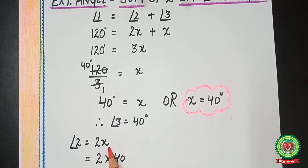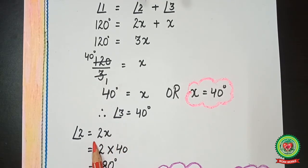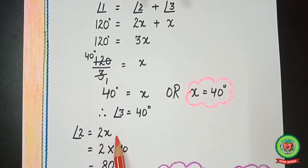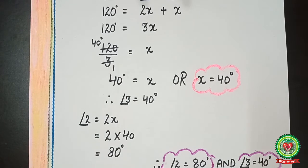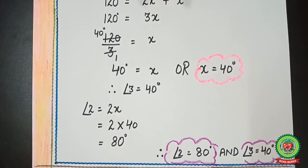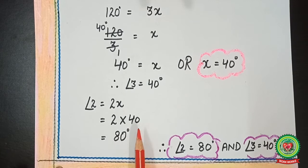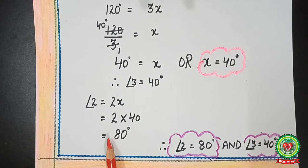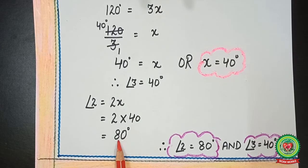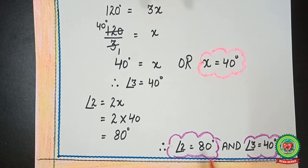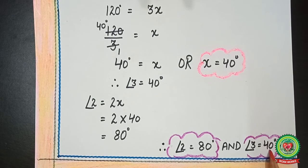Angle 2 = 2x, which means 2 multiplied by x, that is 2 × 40 = 80°. So the final answers are: angle 2 = 80° and angle 3 = 40°.